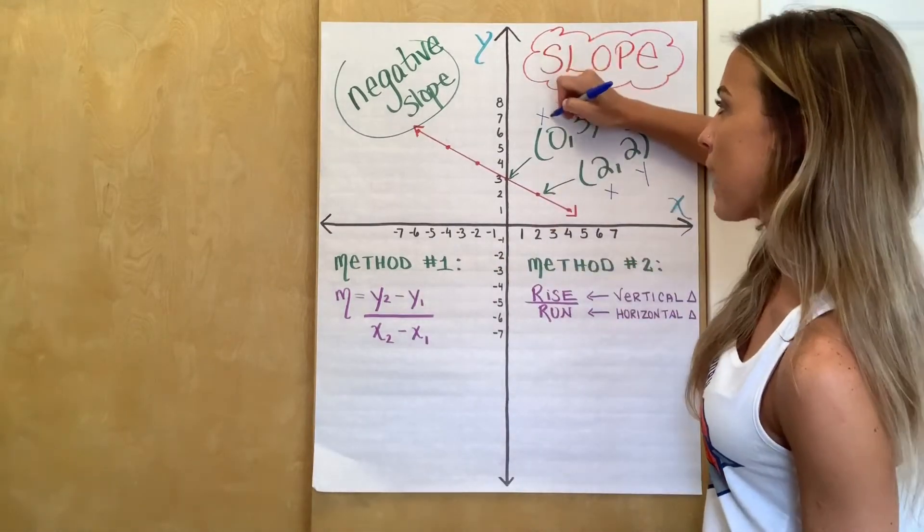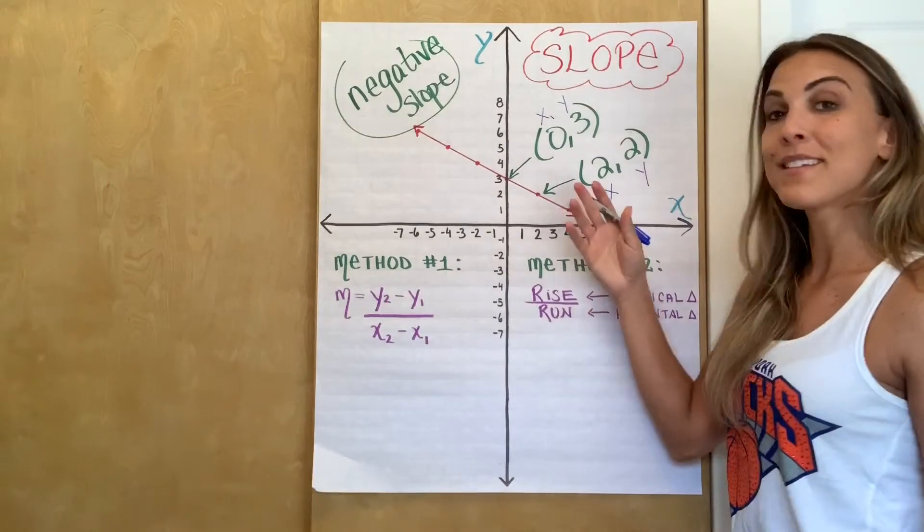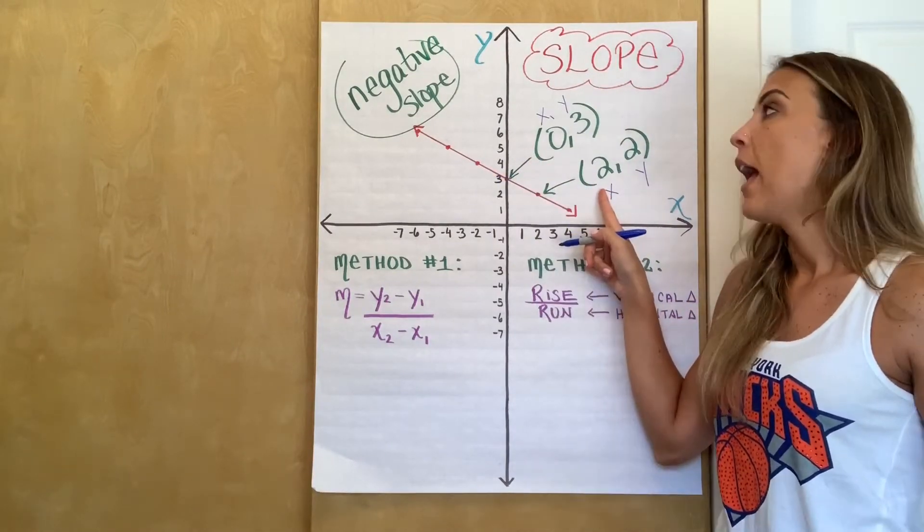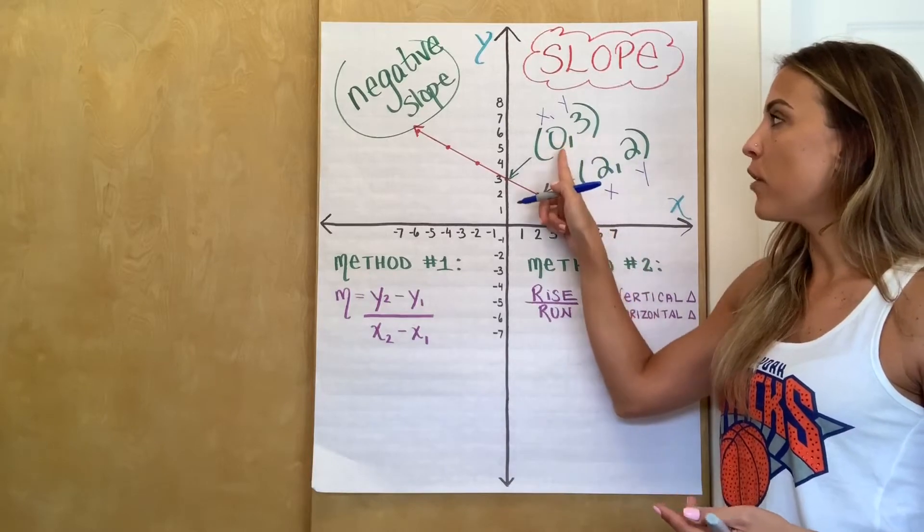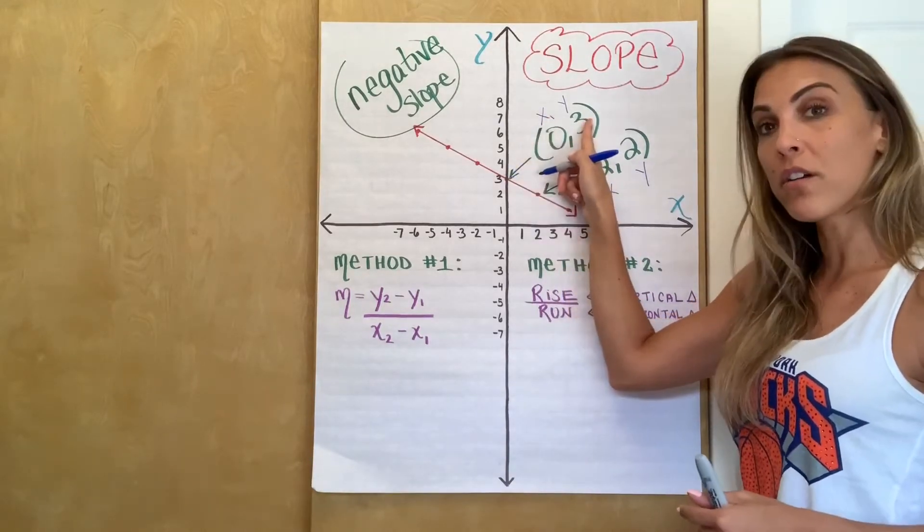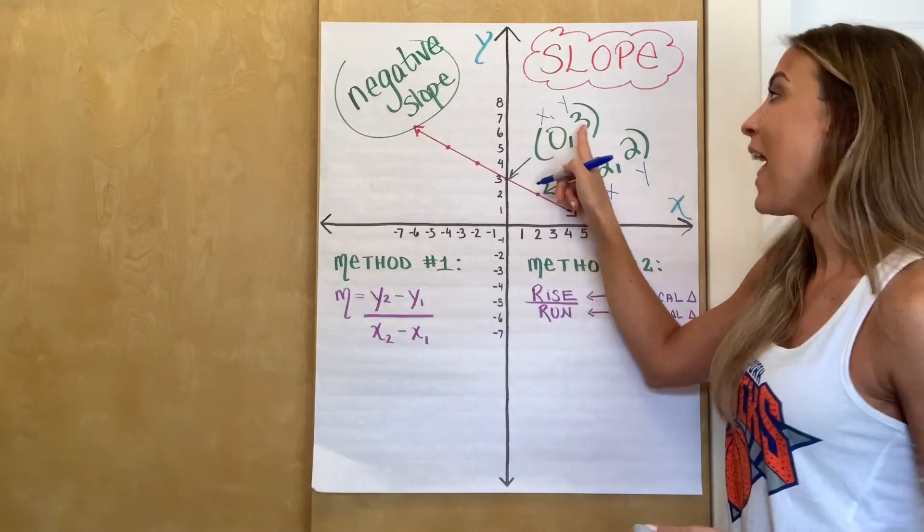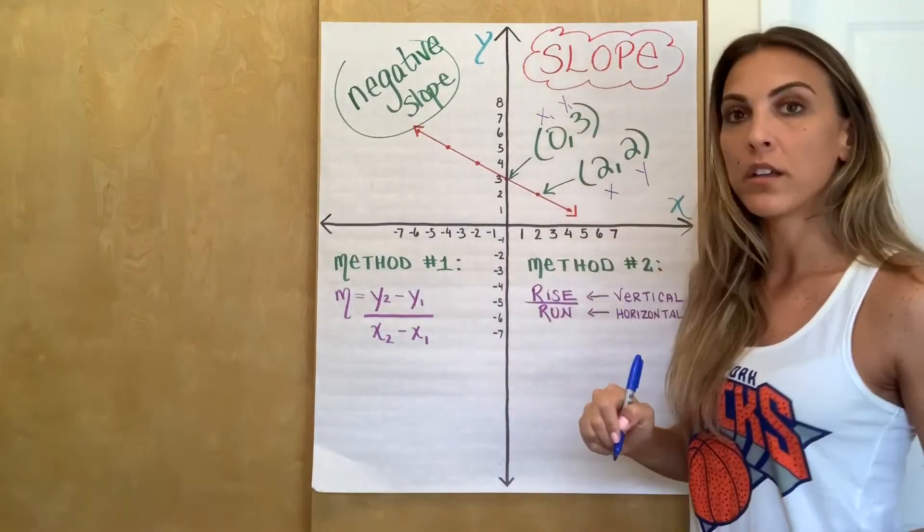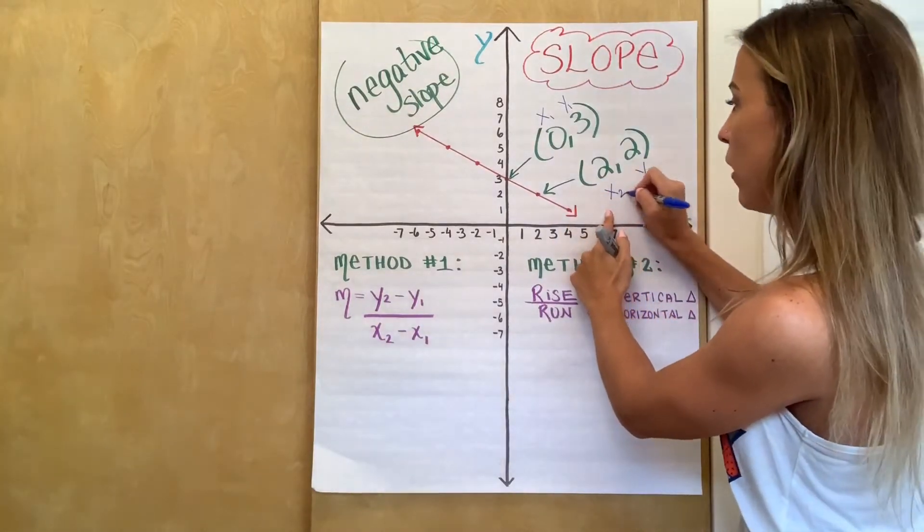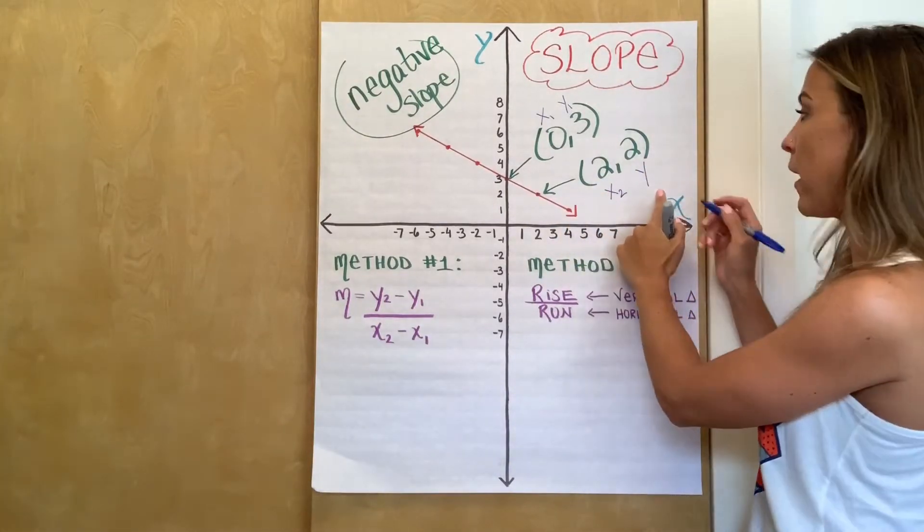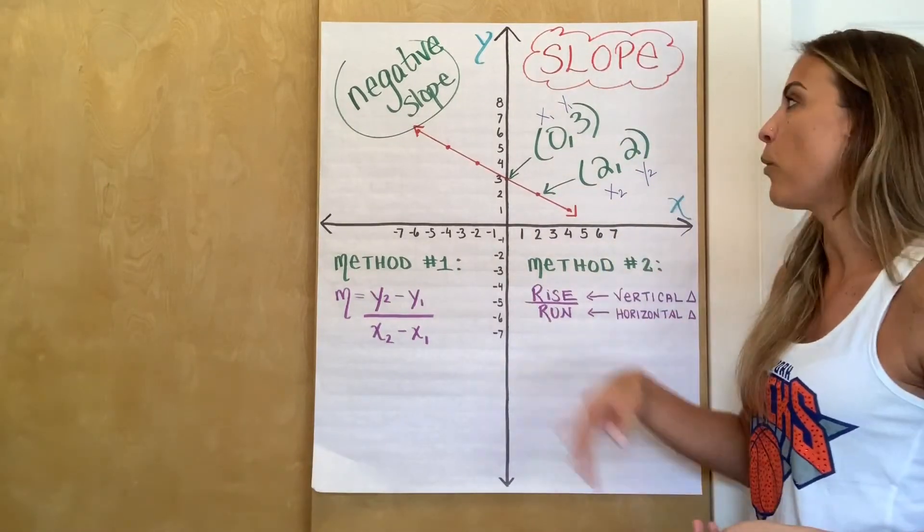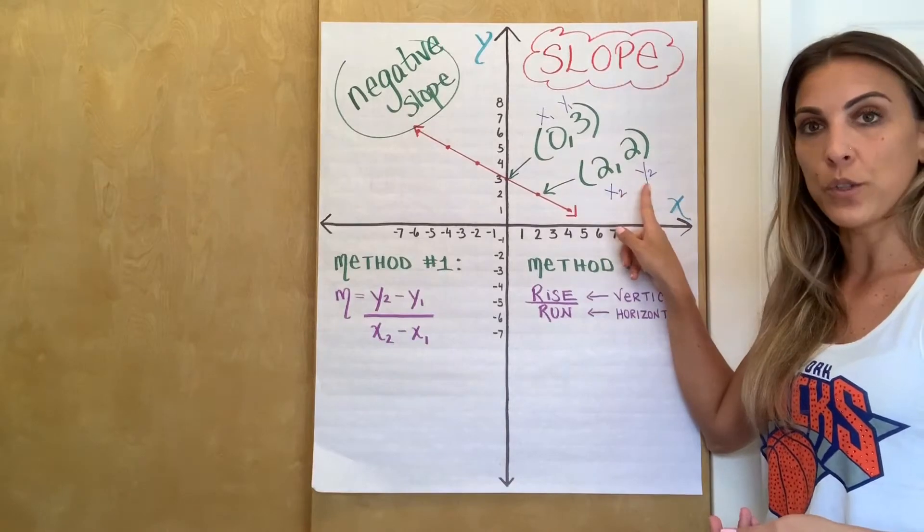So I'm going to call my 0 my x1. And it doesn't matter. So you could have chosen to call your 2 x1 if you wanted to. The thing that matters is that whichever value you choose to be your x1, then its partner, its corresponding y-coordinate has to be your y1. Okay? So because I've chosen for my 2 now to be x2, then its partner, its corresponding y-coordinate is going to be my y2. So that's the first thing. Let's label these points: x1, y1, x2, y2.